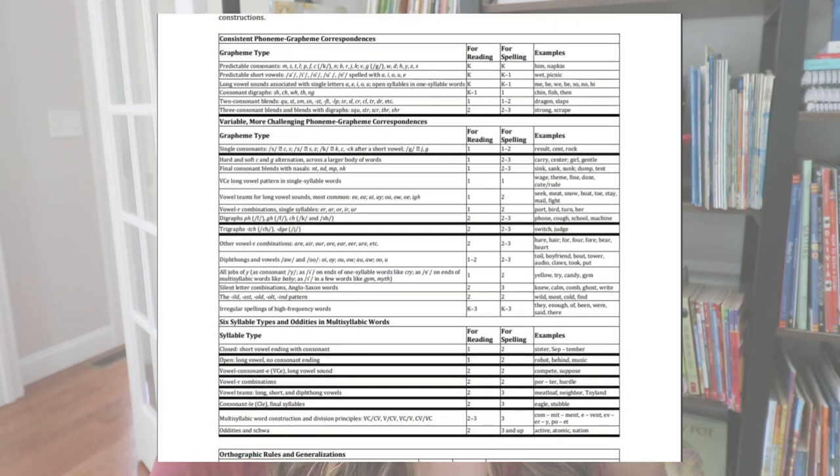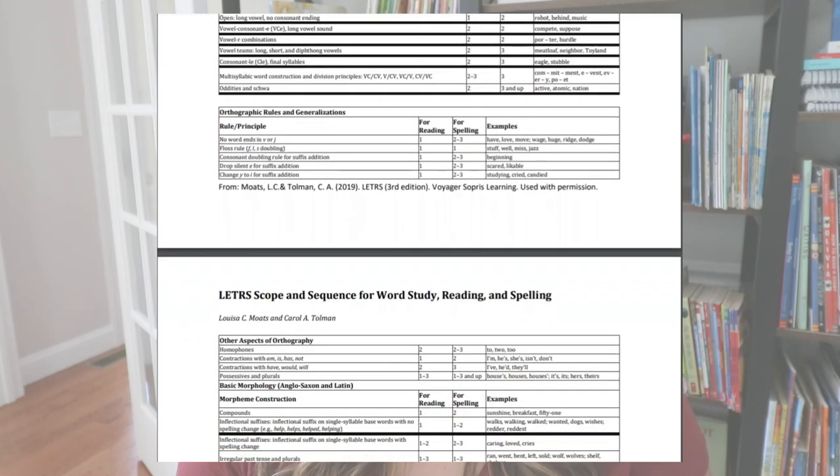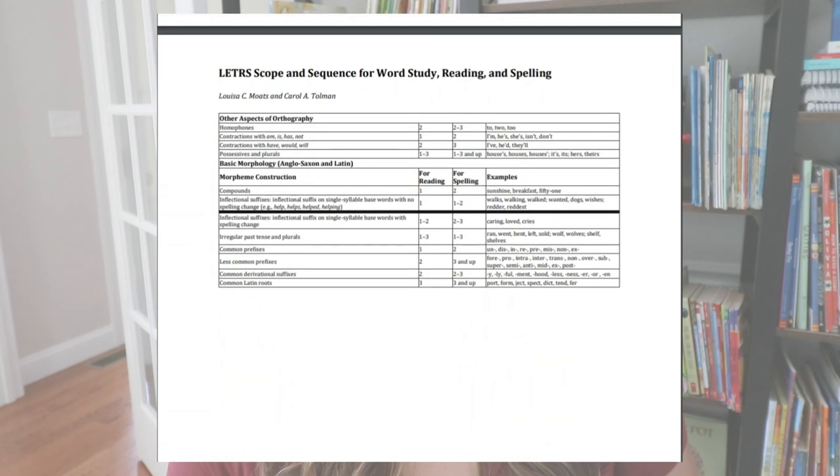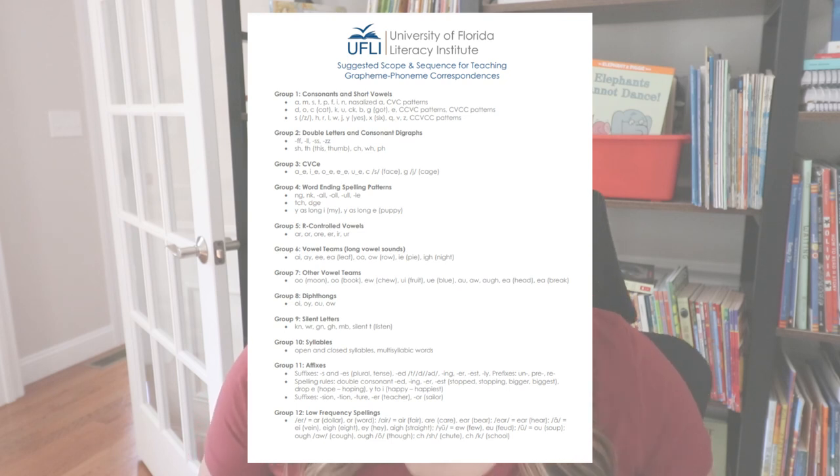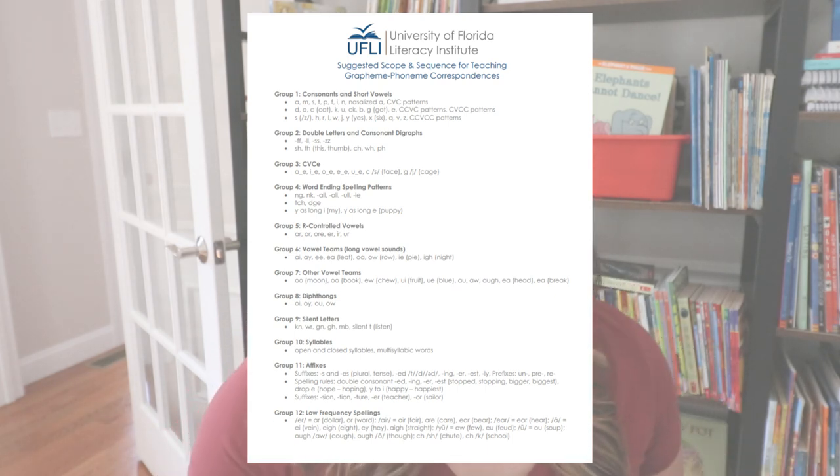If you're looking for a place to start with the scope and sequence, there are two that I really enjoy. The first is the Letters scope and sequence — just do a quick Google search for 'Letters phonics scope and sequence' and you'll find ones you can print out. I also like the scope and sequence from UFLI, the University of Florida Literacy Institute, which shows grapheme and phoneme correspondences in teaching order. I'll link both down in the description so you can align your materials accordingly.